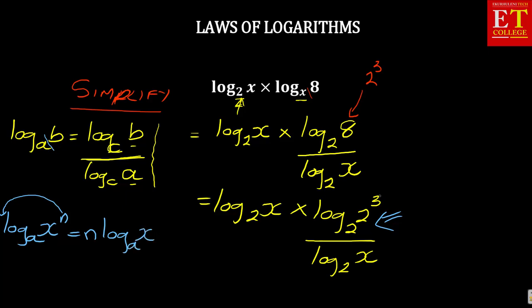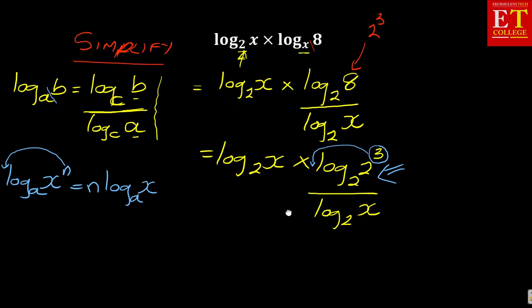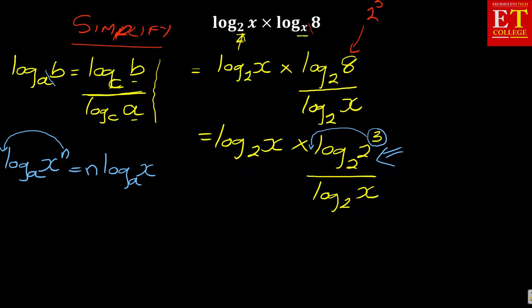So in this case, the 3 that we're given here will also come and drop before the log. So what will our expression look like? Our expression then will look like this. It will be log base 2 of X times. Now, I'm dropping my 3 to become 3 log base 2 of 2 over log base 2 of X.